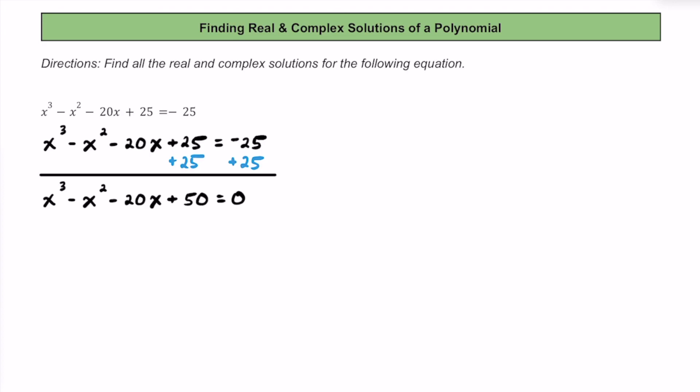Now that we have this equation in standard form, notice how the highest degree of this polynomial is 3. So we're going to be looking for three zeros here. And because we set this equation equal to 0, we're essentially going to see if we can find out when this cubic polynomial is going to cross the x-axis, or find those x-intercepts.